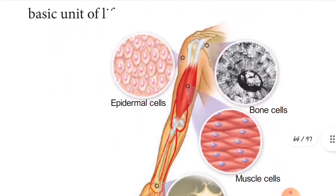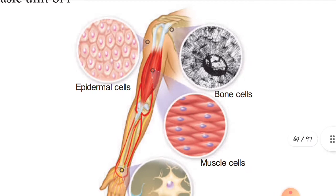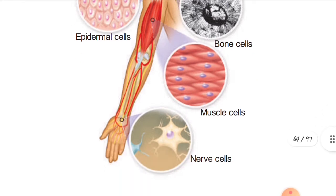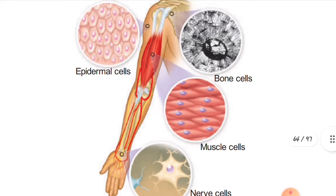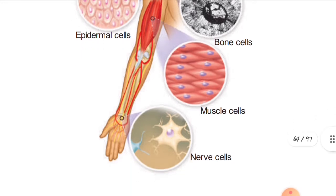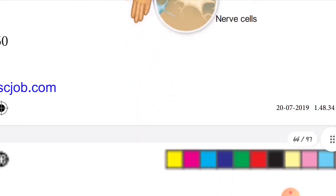See your hand — how many cells are working together to perform its functions? There are bone cells, epidermal cells, muscle cells, and nerve cells. So four types of cells are performing functions in the human body.